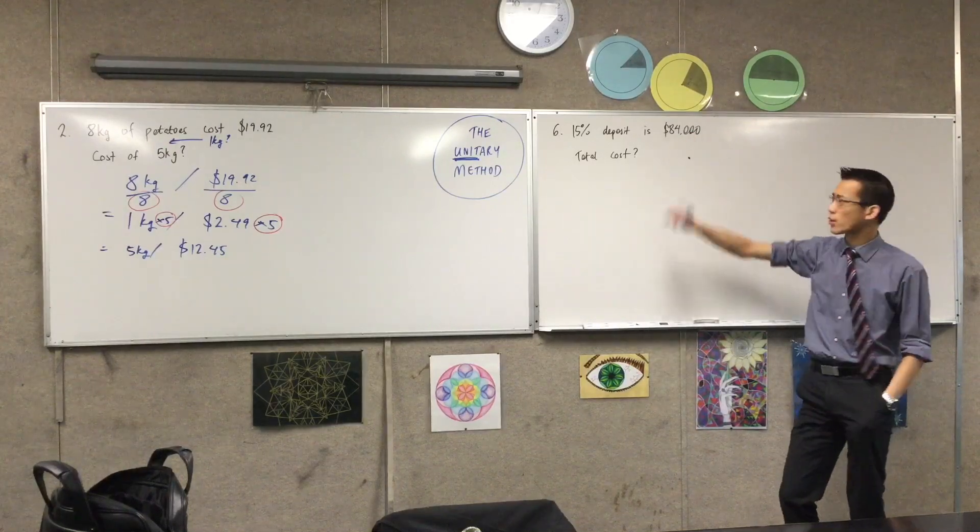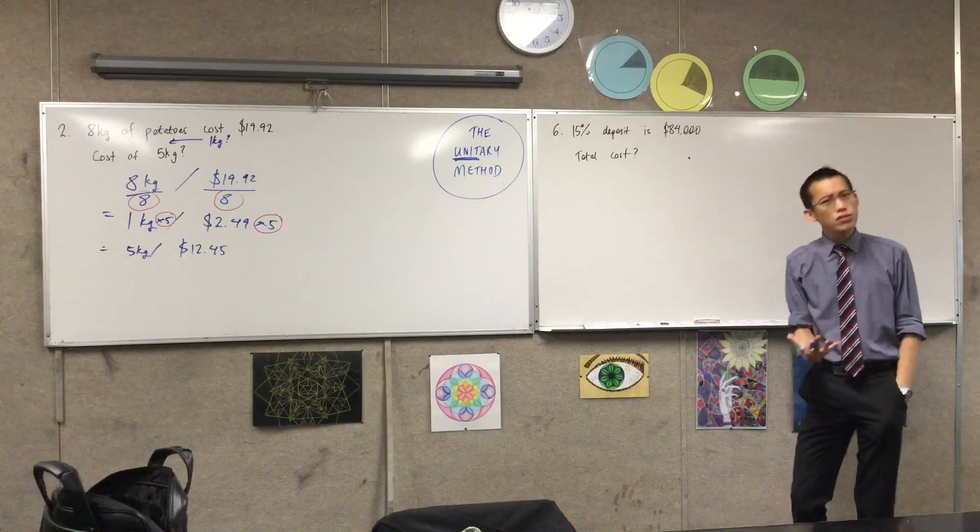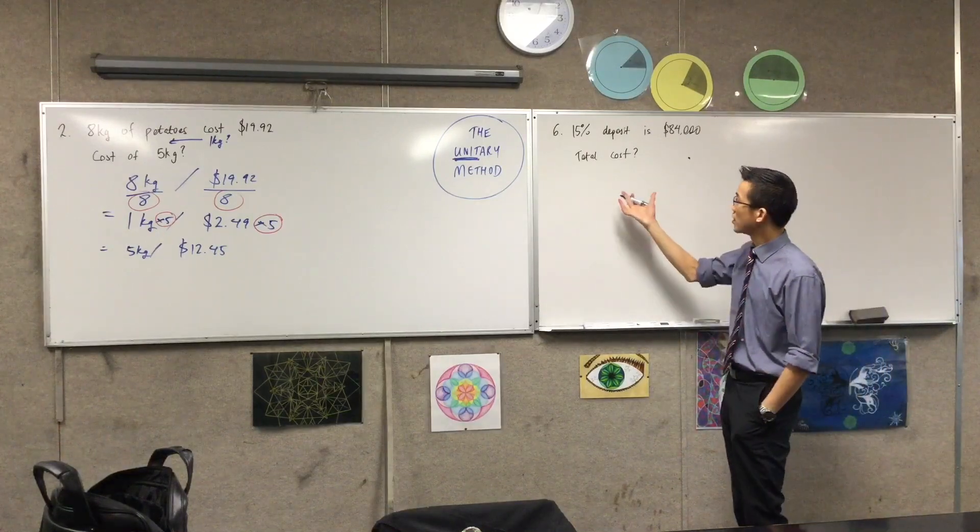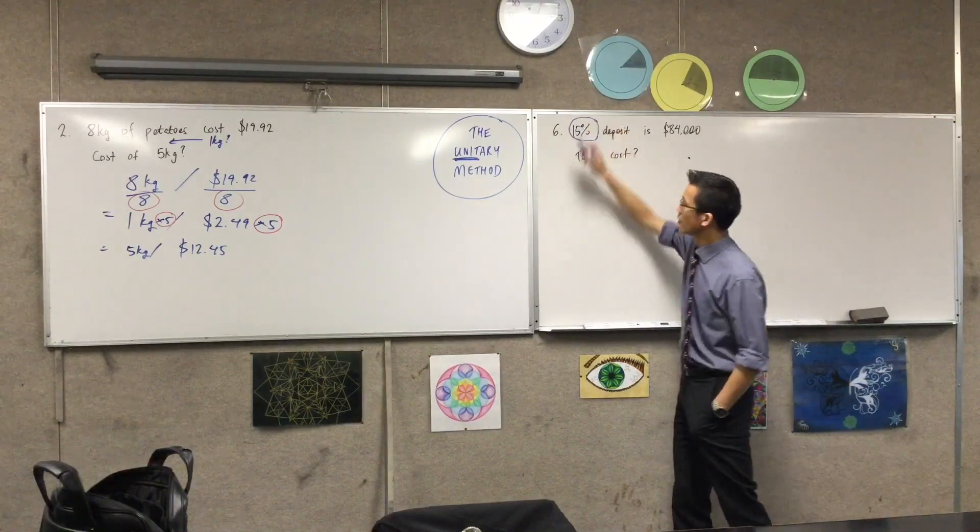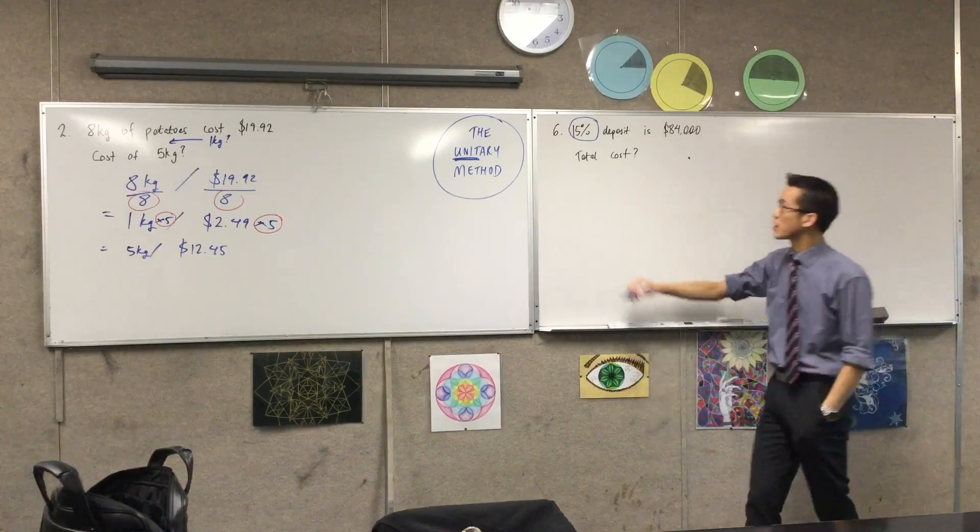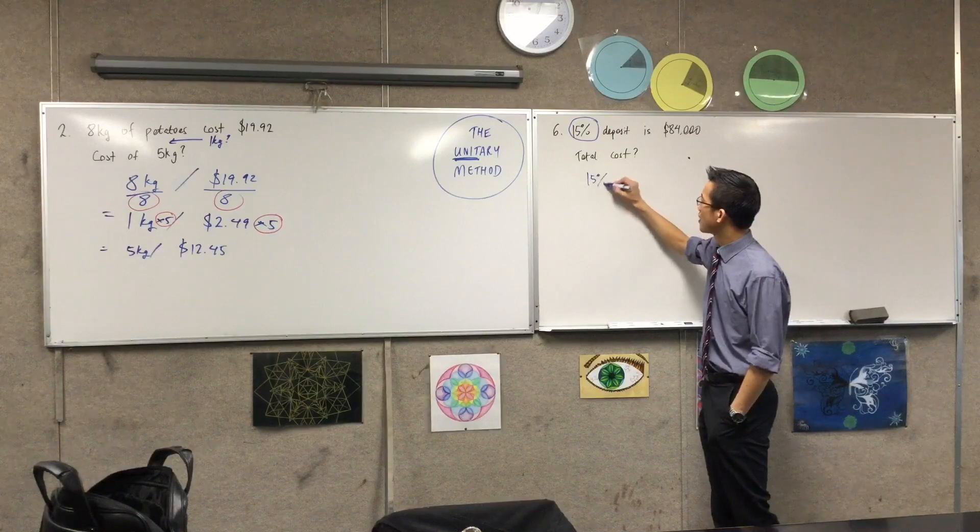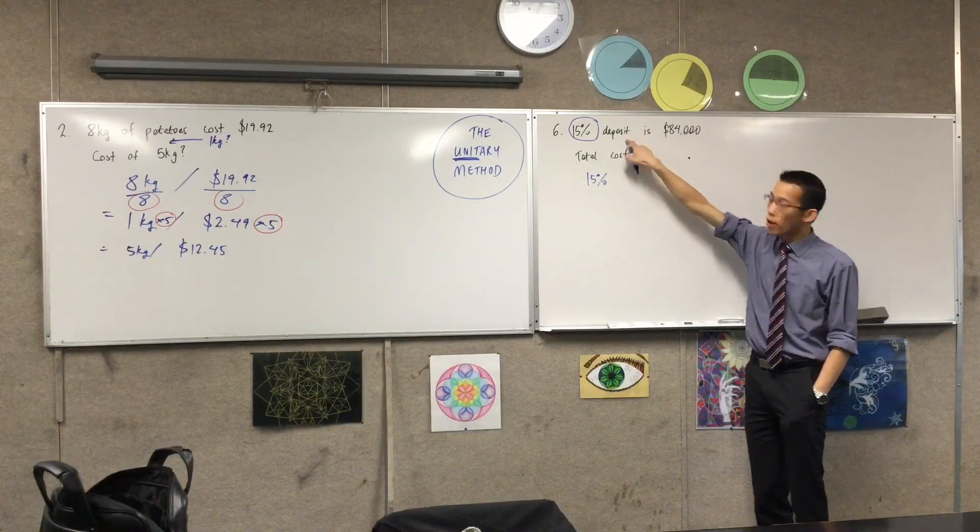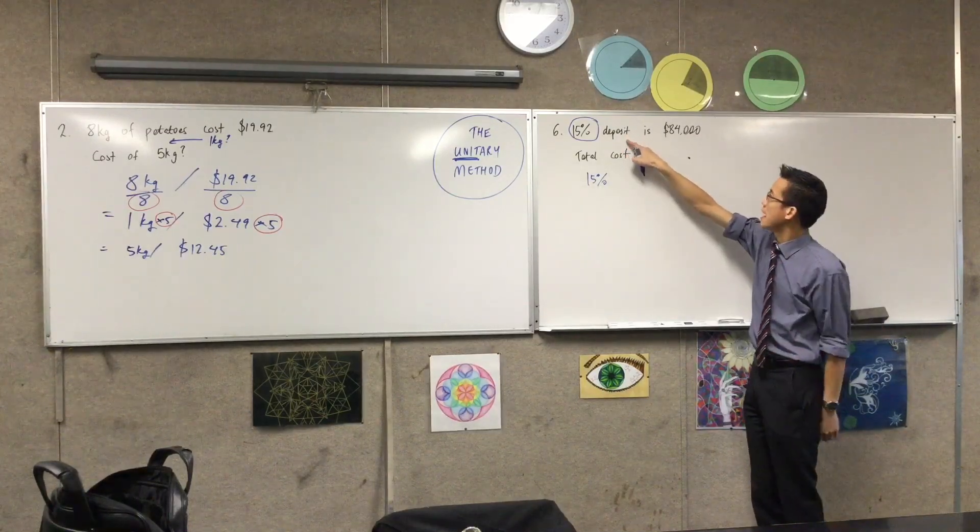And when you have a question like this, you can still use the unitary method to approach it. It's just that the units you're dealing with are percentage points. So what you're going to say is, in exactly the same way as we set it up before,